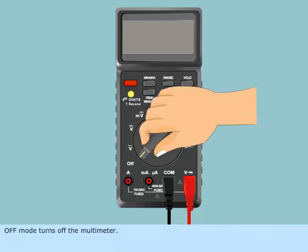OFF mode turns off the multimeter. Turning the switch to any other position will turn on multimeter.